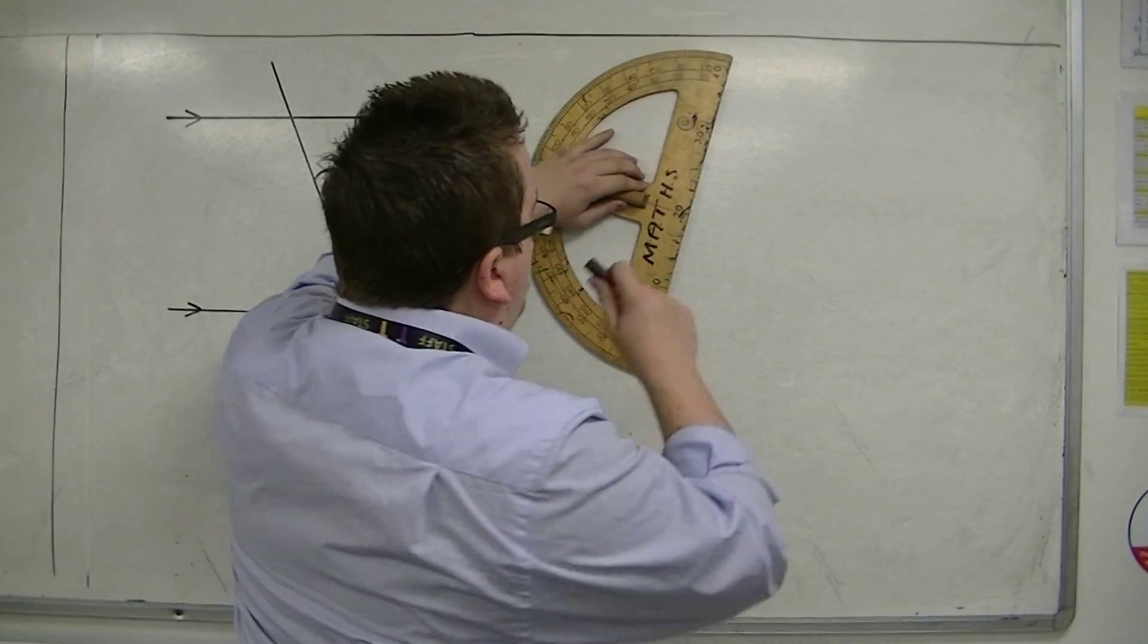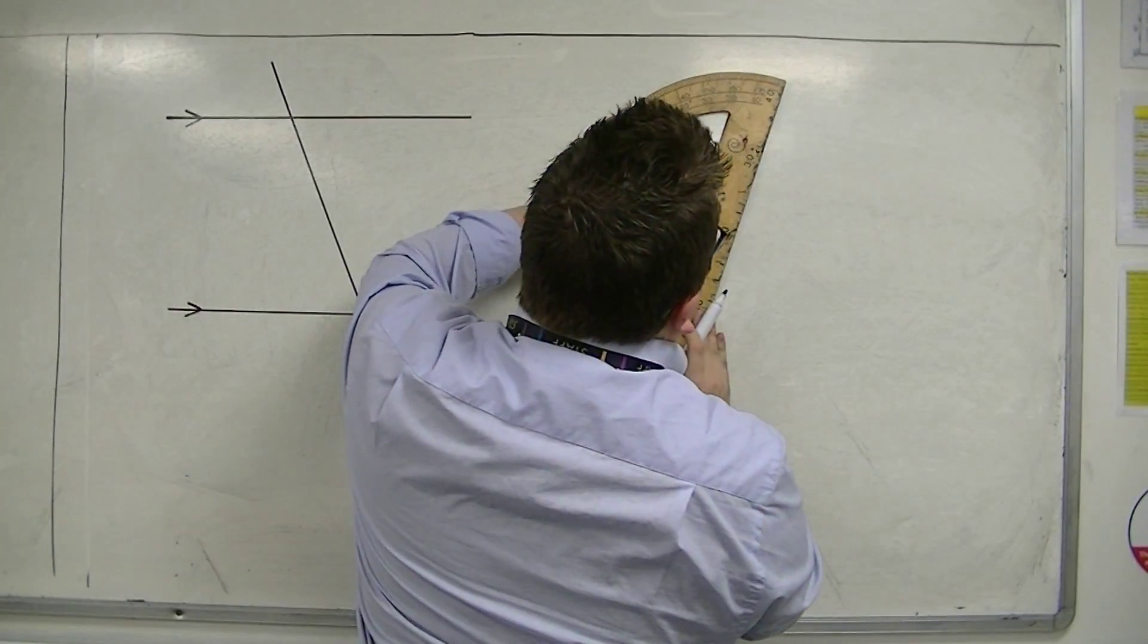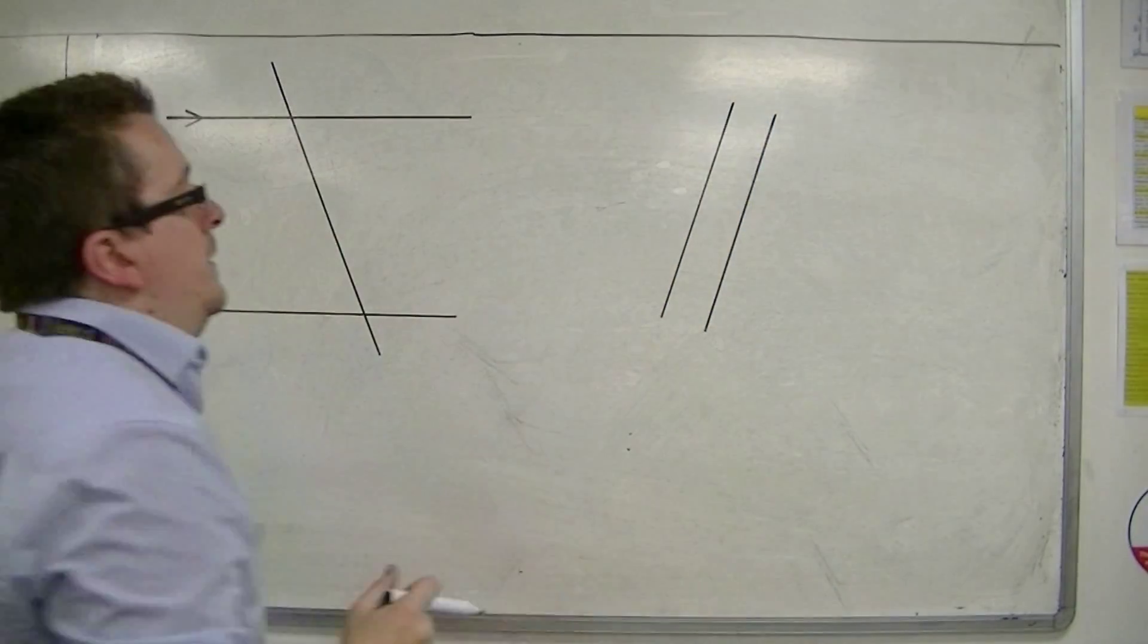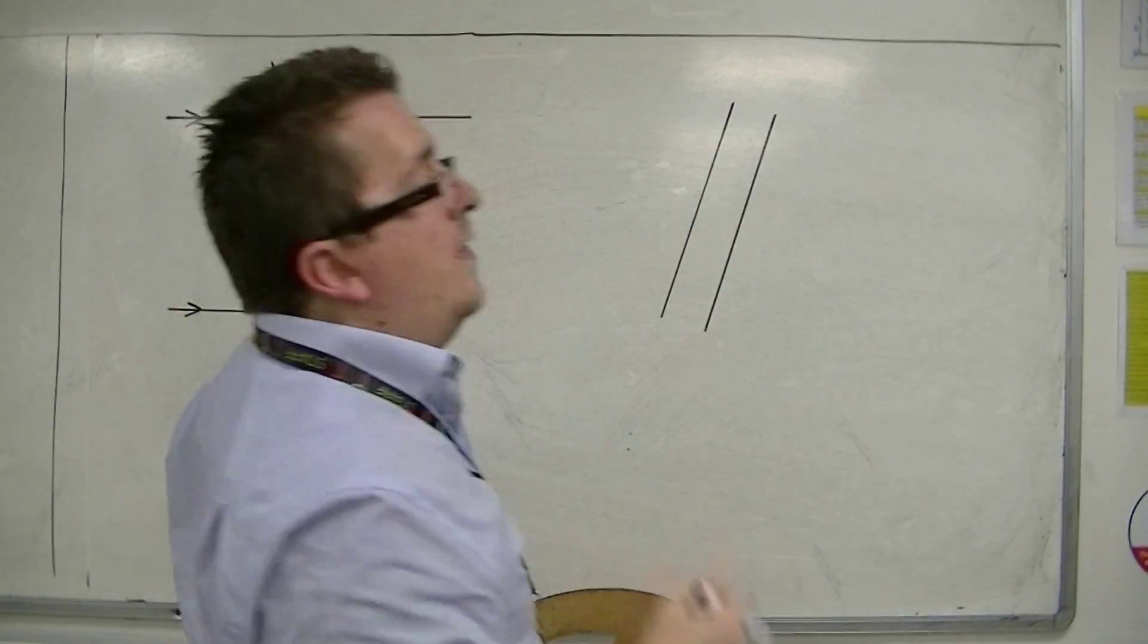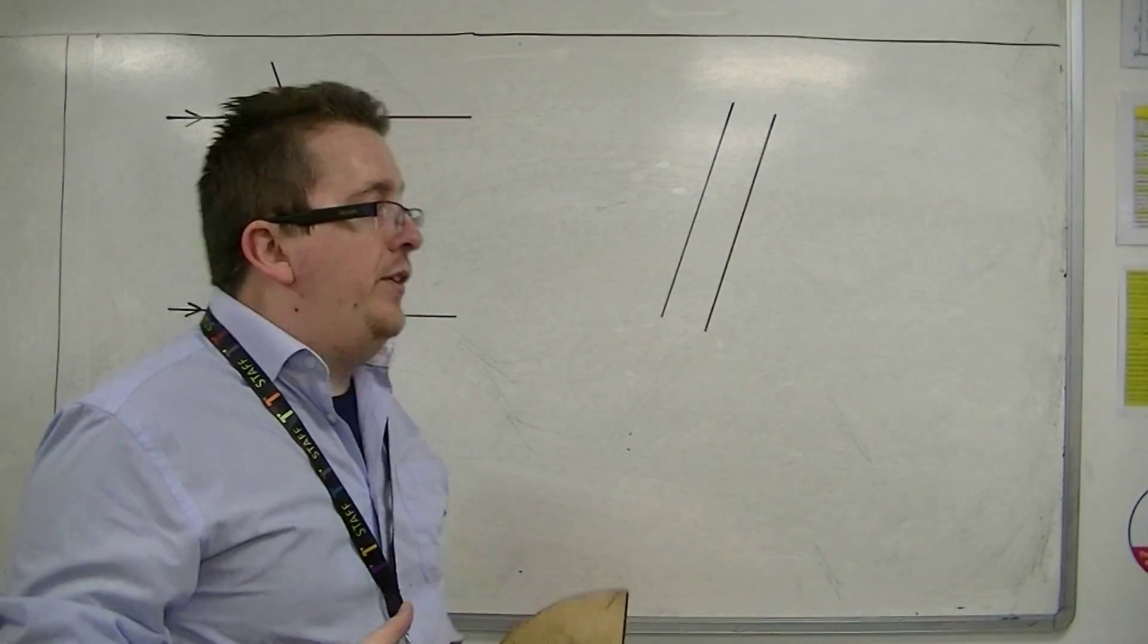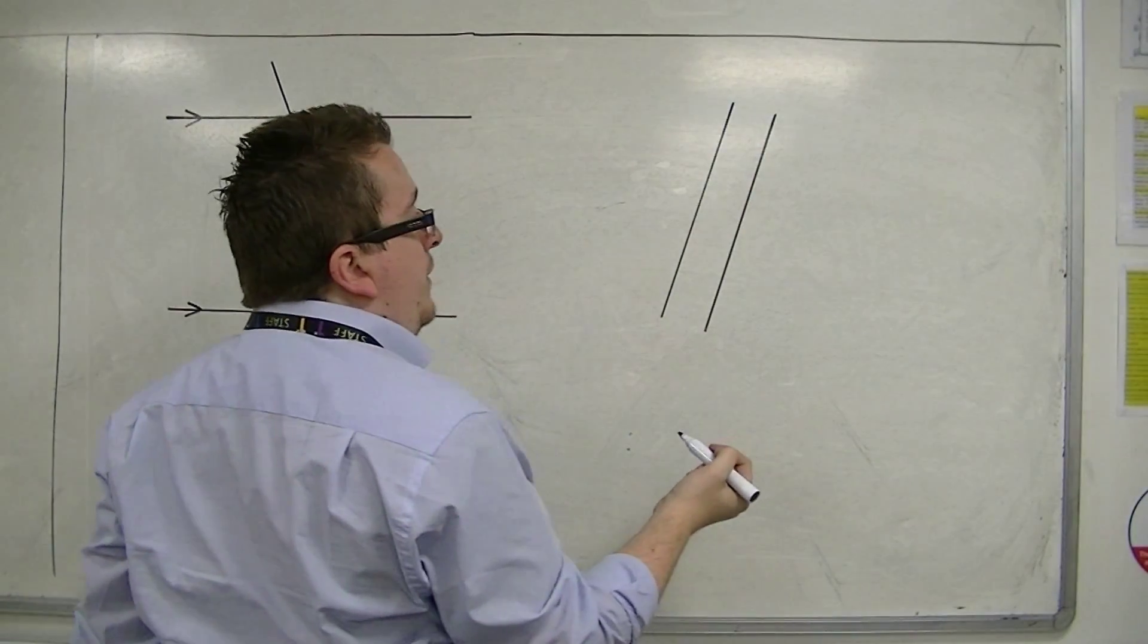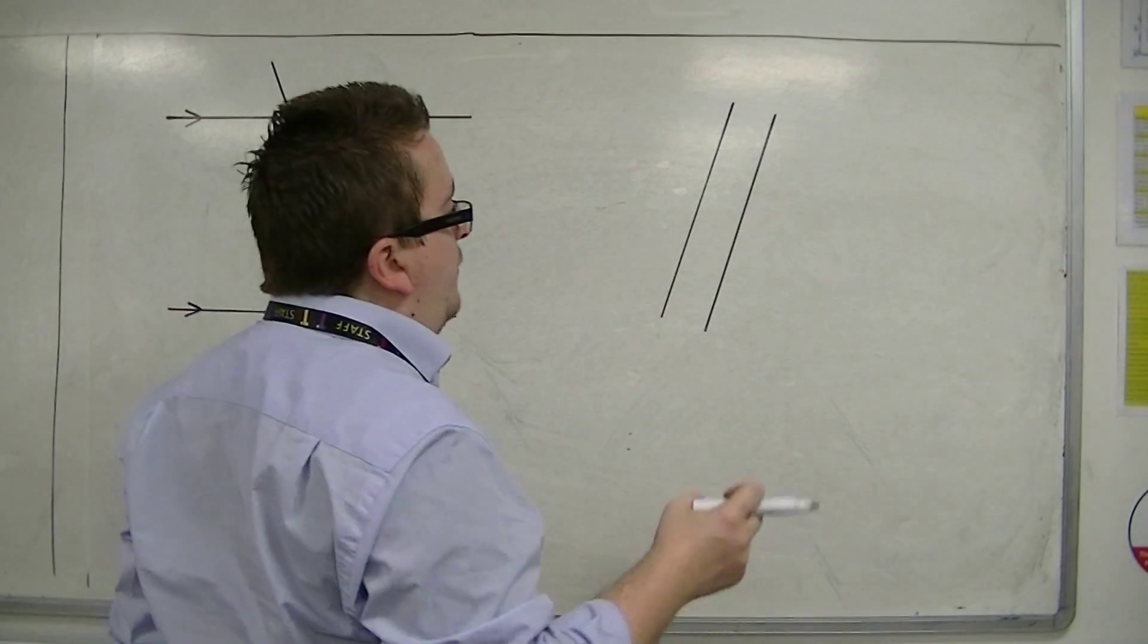So train tracks, it doesn't matter whether I'm looking at them horizontally or vertically or diagonally. Train tracks like that, if they're going off into the distance, they are never going to intersect and cross. I know that train lines effectively will cross each other, but this pair of parallel lines will not cross each other because they'll just keep on going indefinitely.